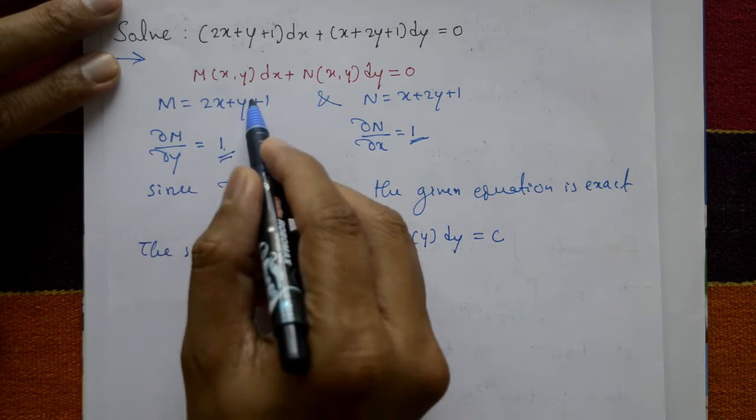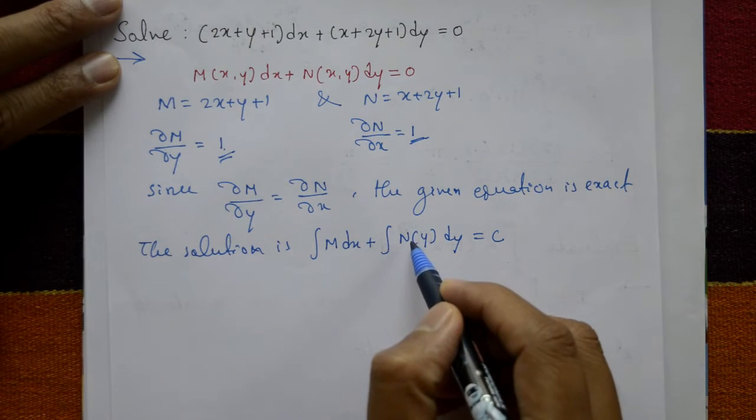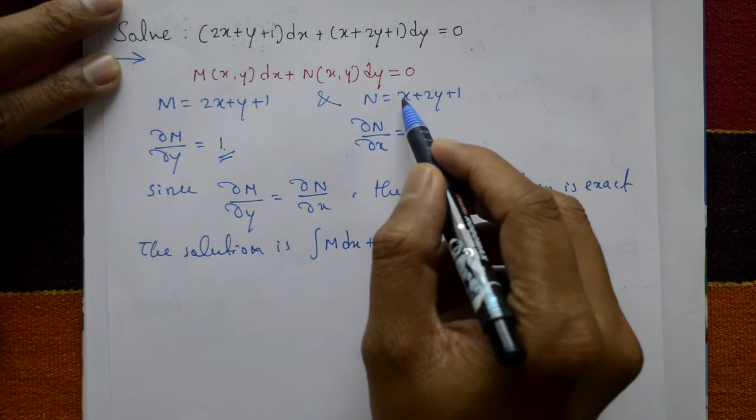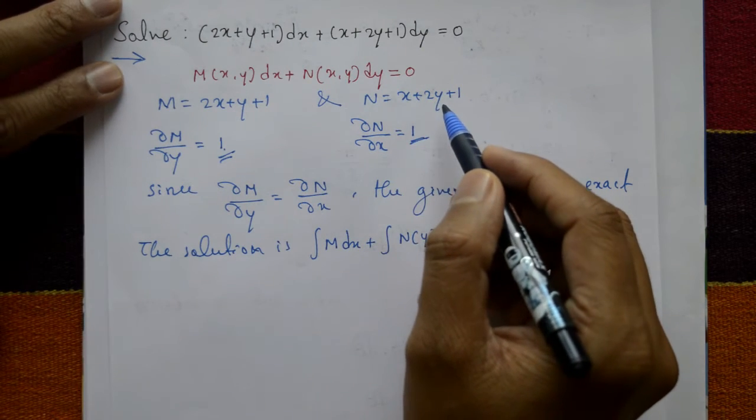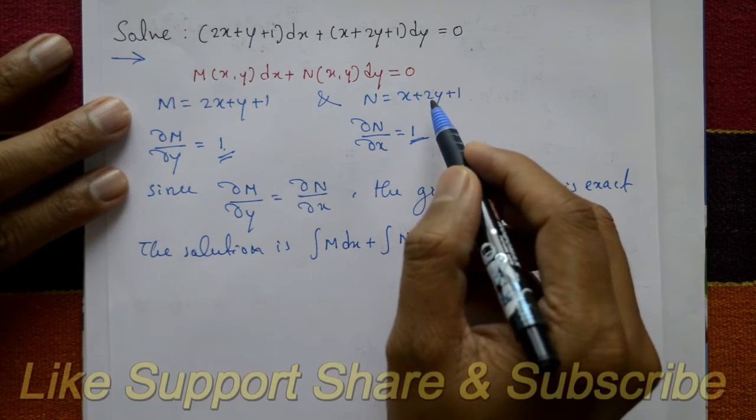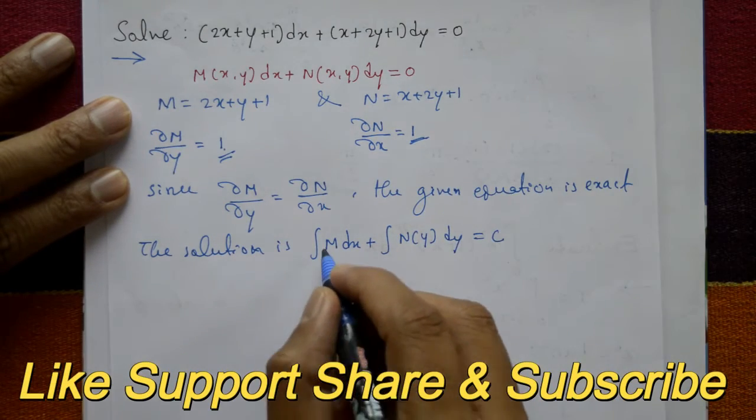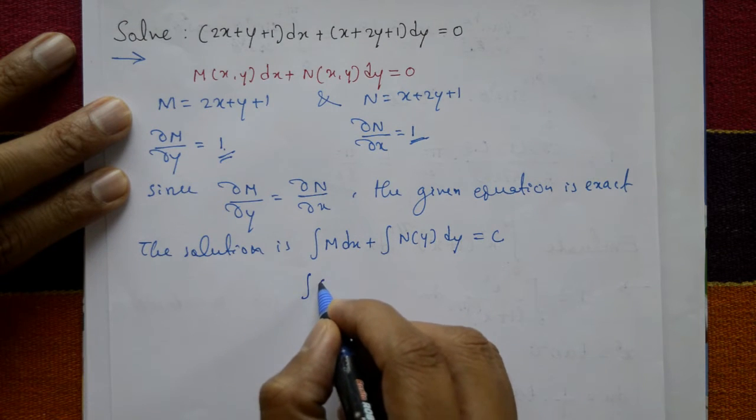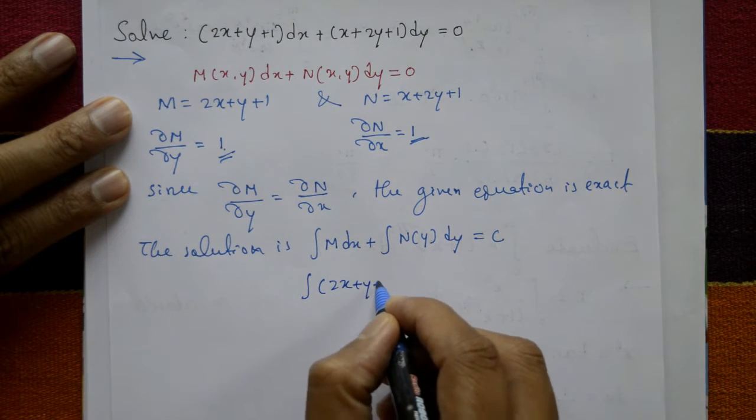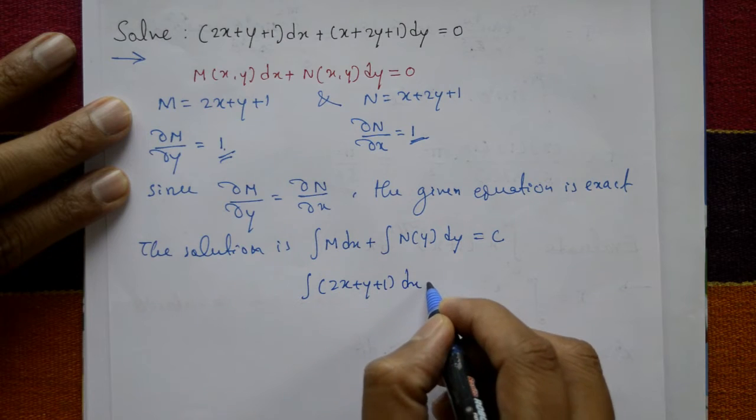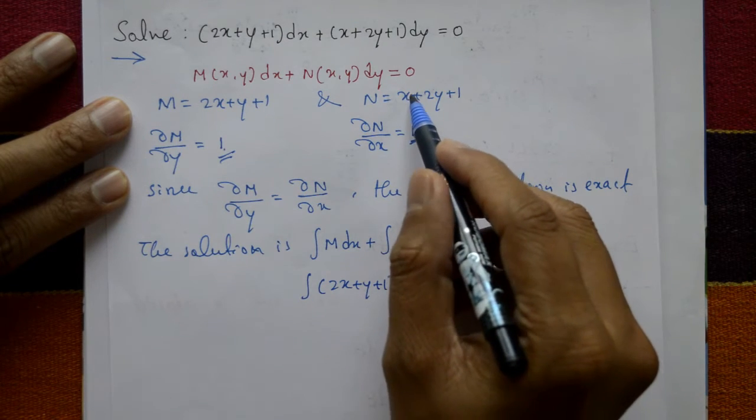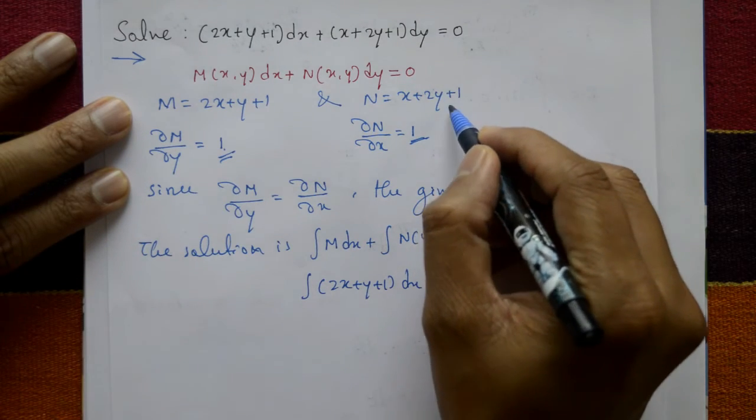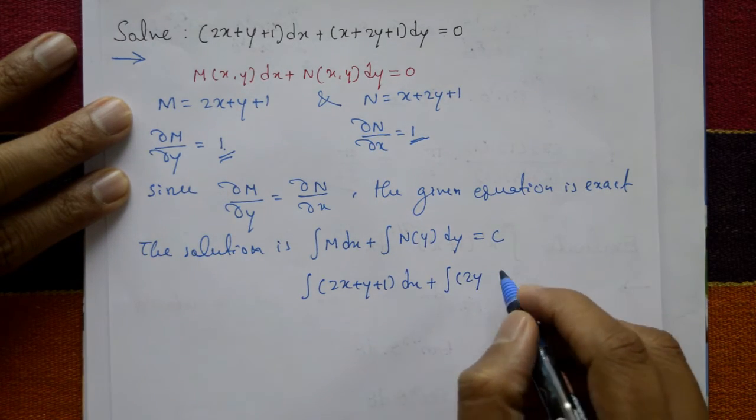Integration of M means take this M part, and integration of N(y) means take only y variable, not x variable. X variable is not considered. Only y variable means integration of M is ∫(2x + y + 1)dx plus, we will not consider x variable. Remaining variable, you write it. Integration of N(y) means 2y + 1.